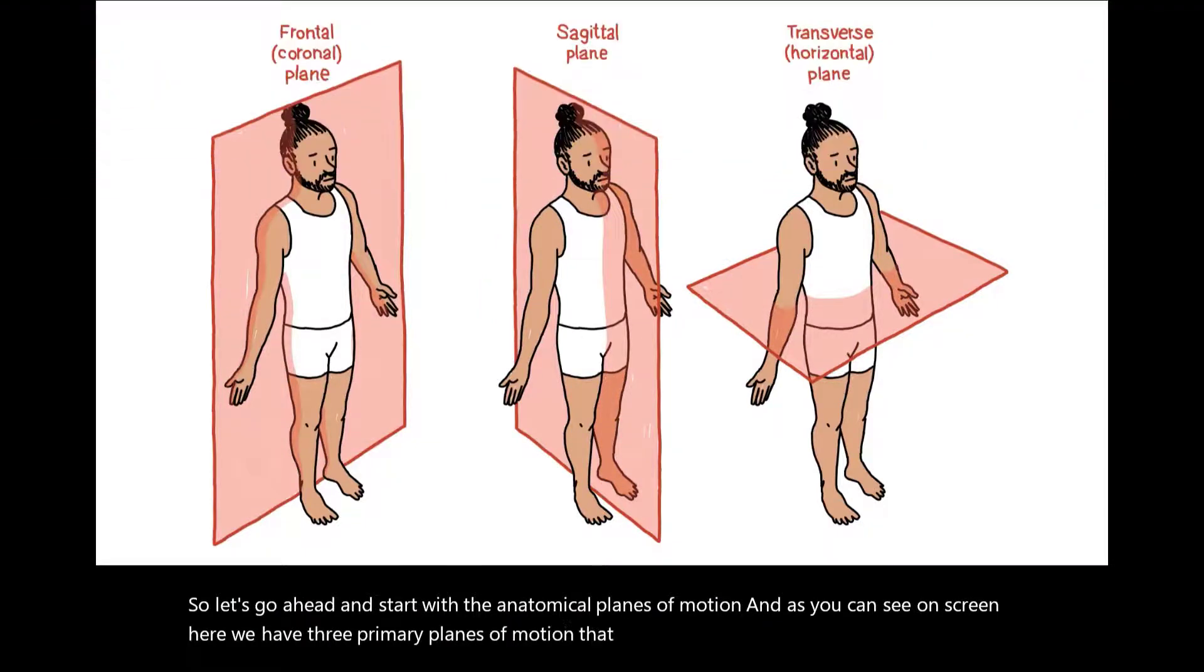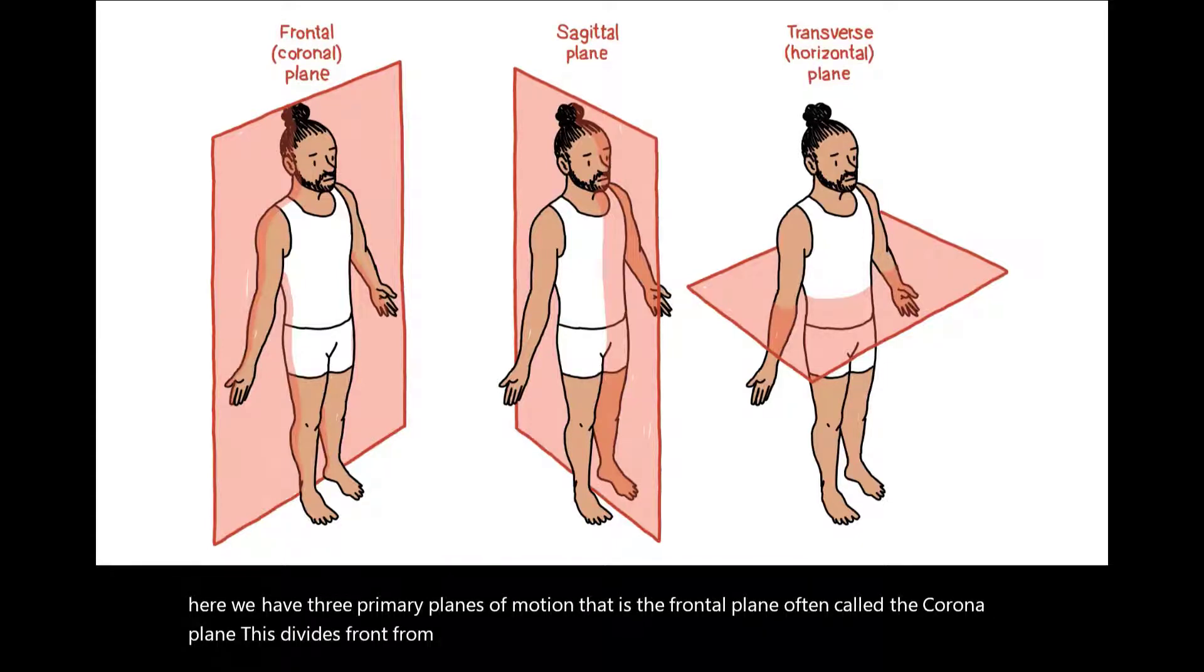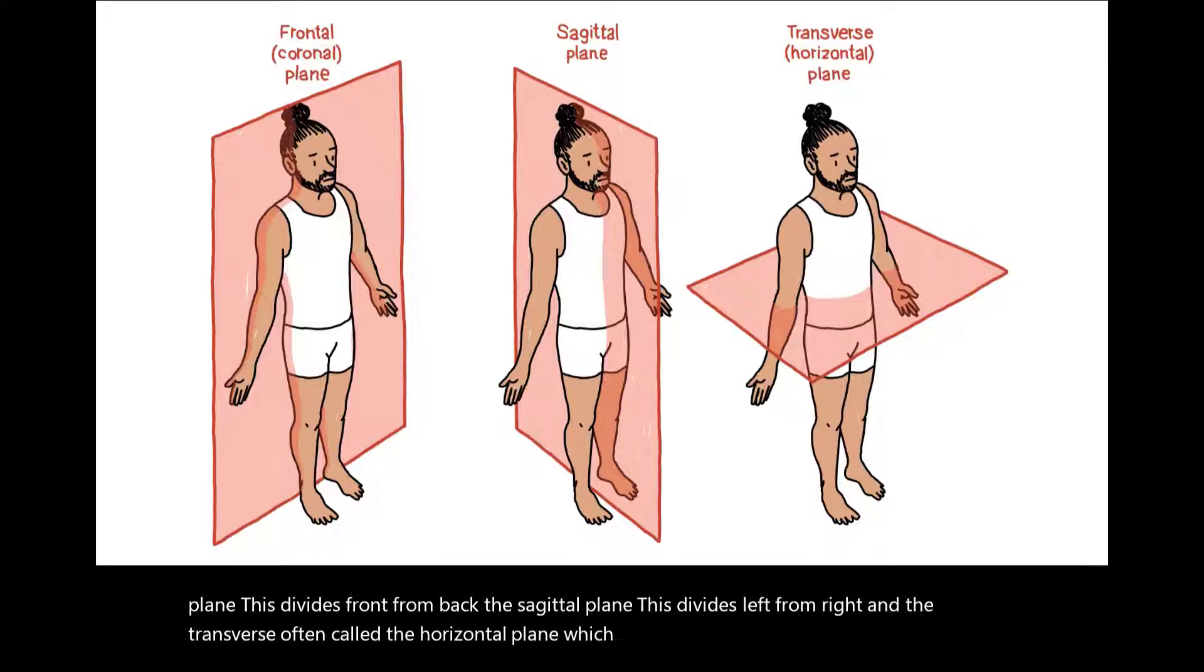That is the frontal plane, often called the coronal plane, which divides front from back. The sagittal plane divides left from right. And the transverse, often called the horizontal plane, divides top from bottom.